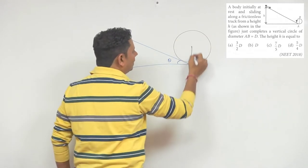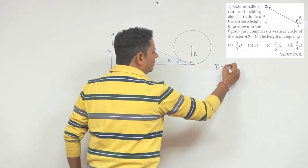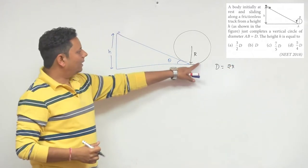The vertical circle has a diameter, let's say radius R, so diameter will be equal to 2R, or R will be equal to D by 2.